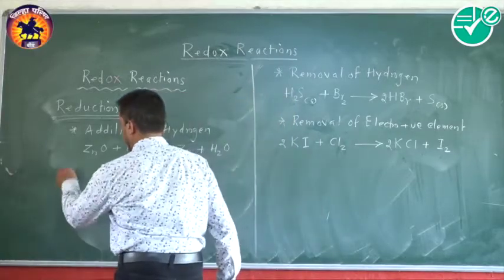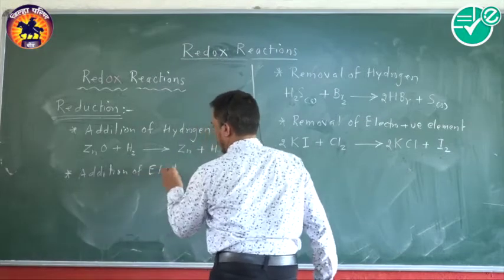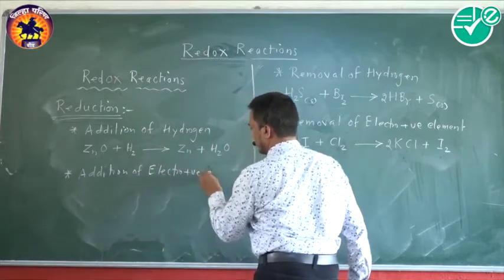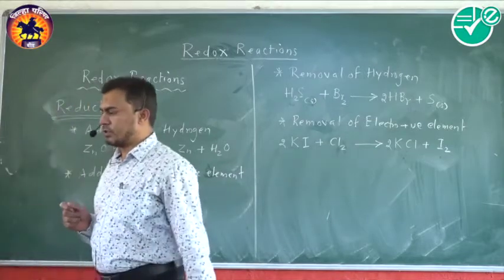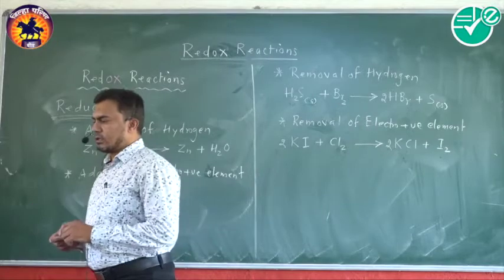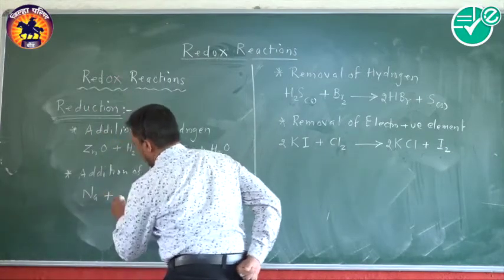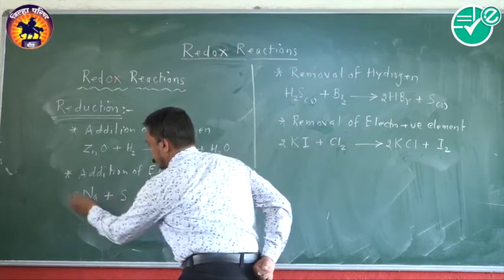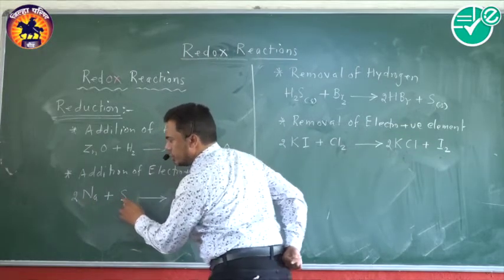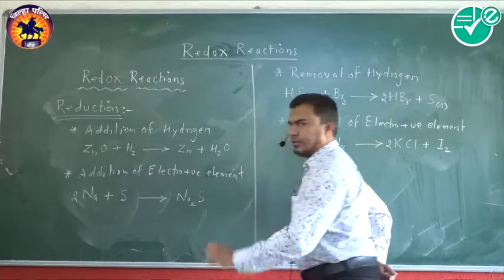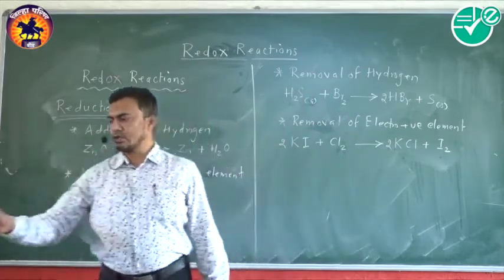Another definition of reduction is addition of an electropositive element to a species. If an electropositive element is added to the species, it is also called reduction. For example, sodium reacts with sulfur. The electropositive element sodium gets added to the sulfur, forming sodium sulfide. This is also called addition of an electropositive element — a reduction reaction.